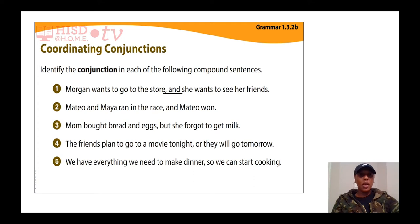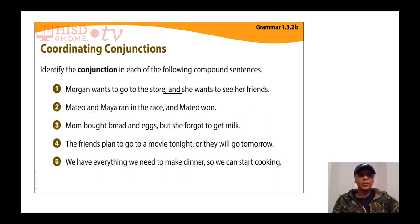Number two: 'Matteo and Maya ran in the race, and Matteo won.' In this sentence, the first conjunction is 'and' combining the two subjects Matteo and Maya. Then we see comma and Matteo won — that combines the sentence 'Matteo and Maya ran in the race' with the sentence 'Matteo won.'